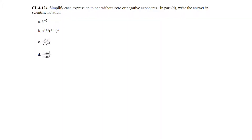Question 124: simplify each expression to one without zero or negative exponents, and make sure part d is in scientific notation. For part a, three to the negative two: negative exponents can be thought of as reciprocals, so that's one over three squared, which is one-ninth.